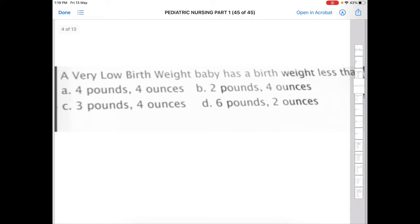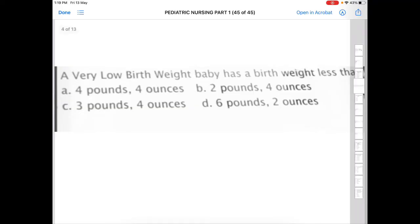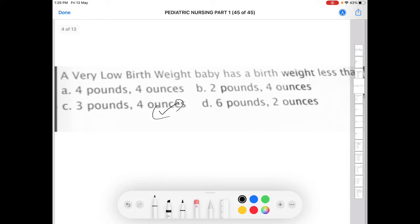Next question: a very low birth weight baby has a birth weight less than — Option A: 4 pounds 4 ounces, Option B: 2 pounds 4 ounces, Option C: 3 pounds 4 ounces, Option D: 6 pounds 2 ounces. The correct answer is C.